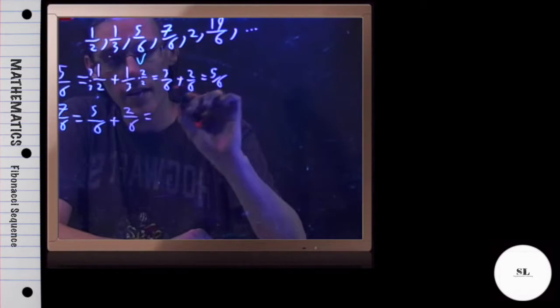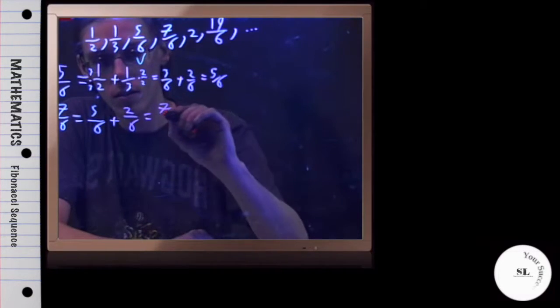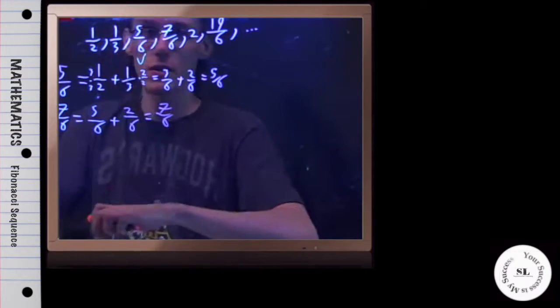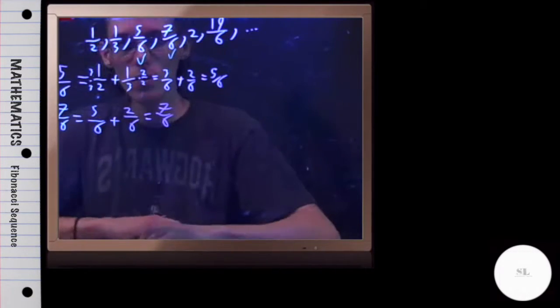So again, when the denominators match, just add the tops. So 5 plus 2 is 7. So it's 7 over 6. And so far, this is obeying the rule. So let's do the next one.